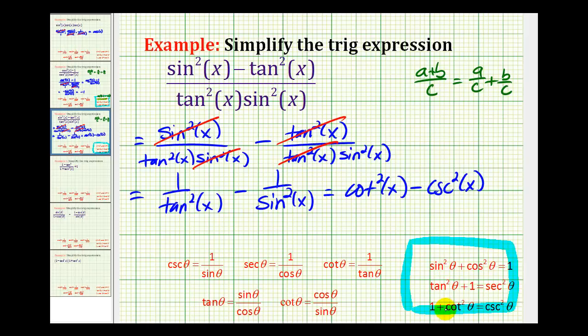Now if we look at these identities again, if we take a look at this last one in particular, if we were to subtract cosecant squared on both sides and then subtract one on both sides, we would have cotangent squared theta minus cosecant squared theta equals negative one. And this matches our expression. So cotangent squared x minus cosecant squared x is equal to negative one.